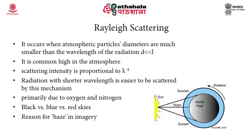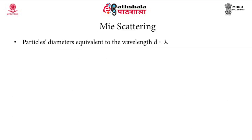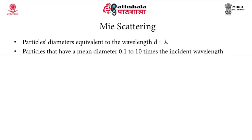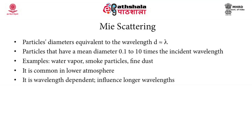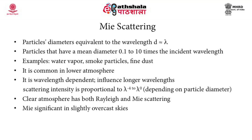Rayleigh scattering is responsible for the presence of haze in satellite imagery. In Mie scattering, the diameter of the particles is more or less equivalent to the wavelength of the radiation — particles with a mean diameter of 0.1 to 10 times the incident wavelength cause Mie scattering. Examples include water vapor, smoke particles, and fine dust. Mie scattering generally occurs in the lower atmosphere and influences longer wavelengths. Clear atmosphere has both Rayleigh scattering and Mie scattering, while Mie scattering is significant in slightly overcast skies.